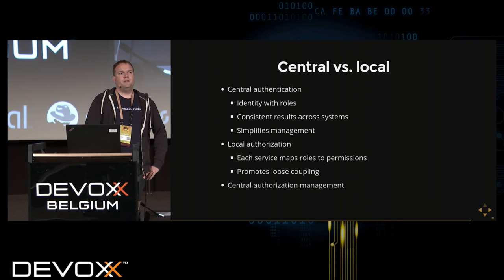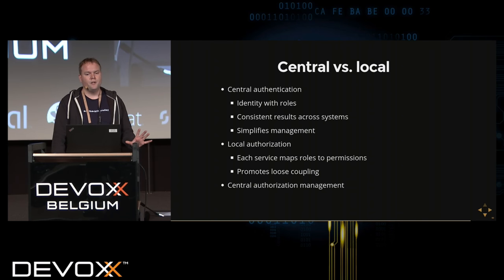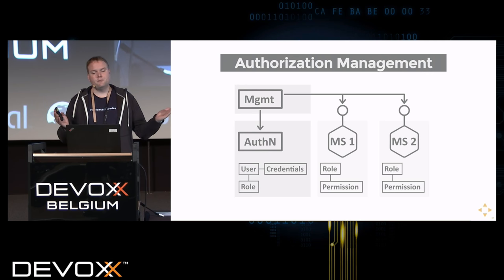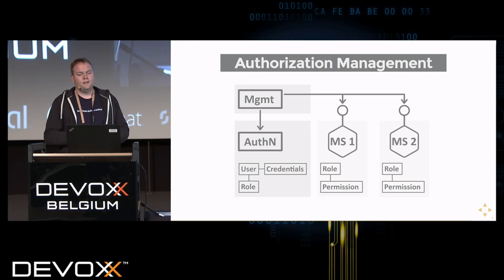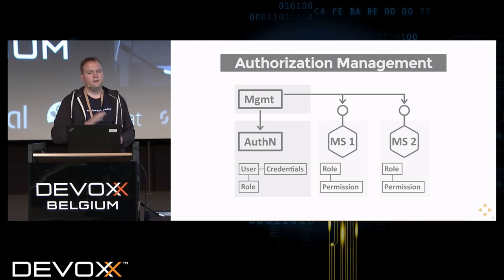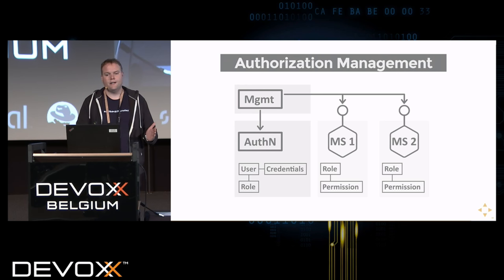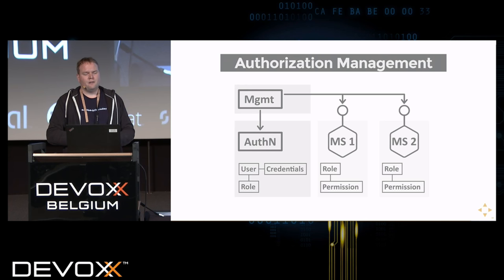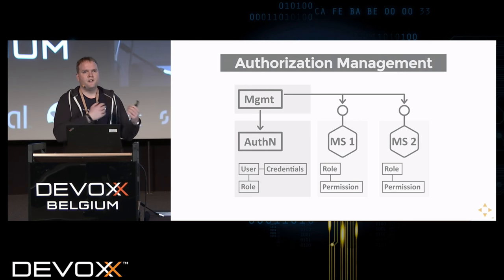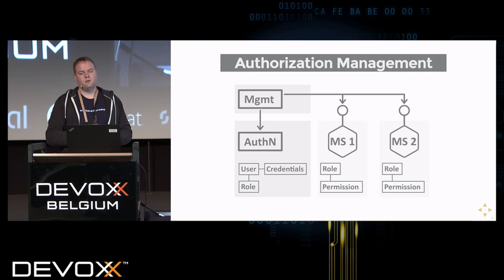Management can be centralized though: if you create an API for each microservice that can report which permissions it has, you can gather them all centrally, push roles out to all microservices, and build a central UI to manage everything. For example, you can create a new role centrally and push it out to all microservices via an API, and each microservice then maps that role to its own permissions.